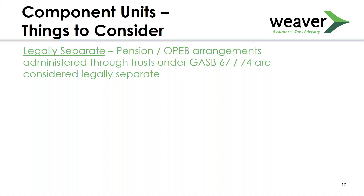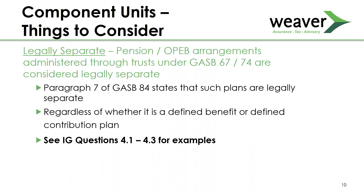There are a few concepts in component unit determination worth reviewing. With GASB 84, it notes that pension and OPEB arrangements administered through a trust under GASB 67 and 74 are considered legally separate from the government, as noted in paragraph 7 of GASB 84. This applies regardless of whether it's a defined benefit plan or a defined contribution plan. See implementation guide questions 4.1, 0.2, and 0.3 for specific examples.